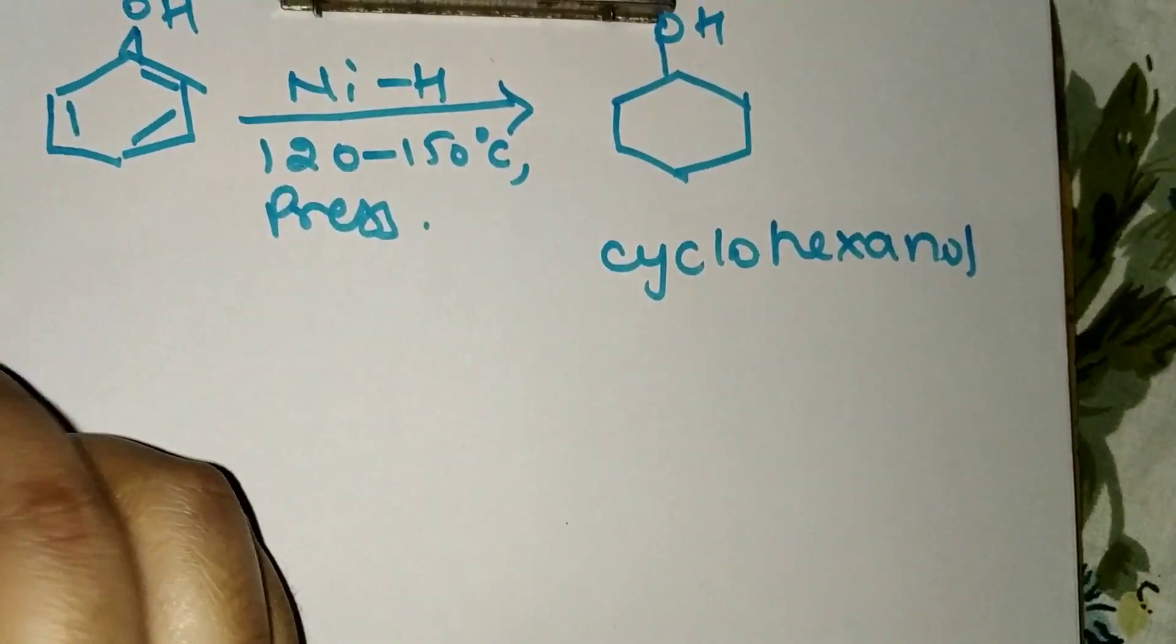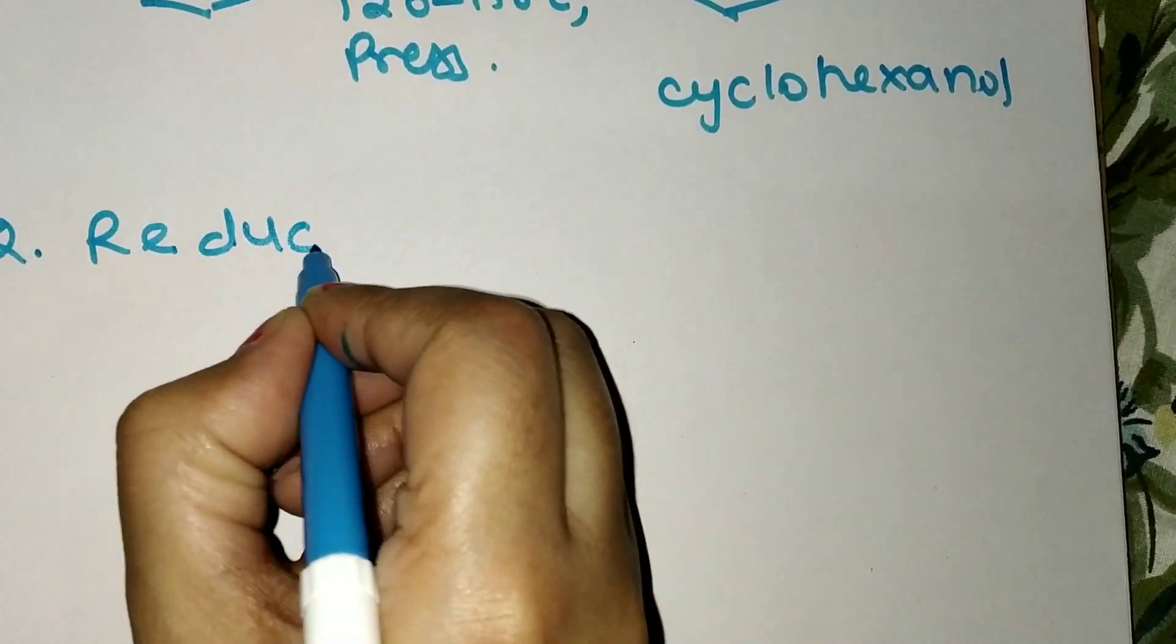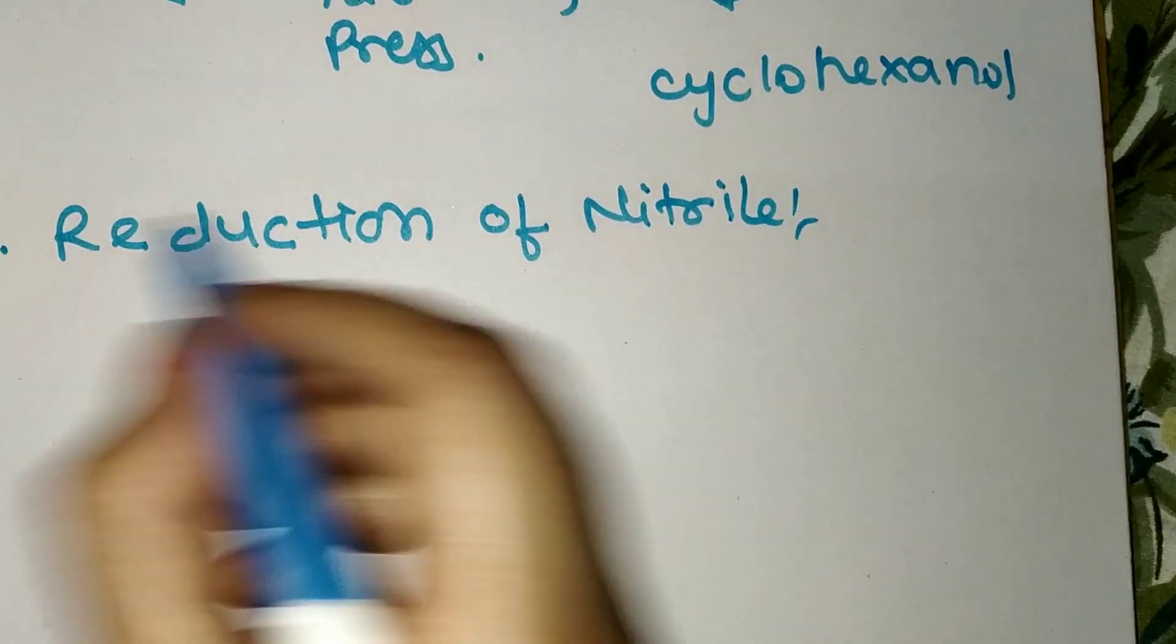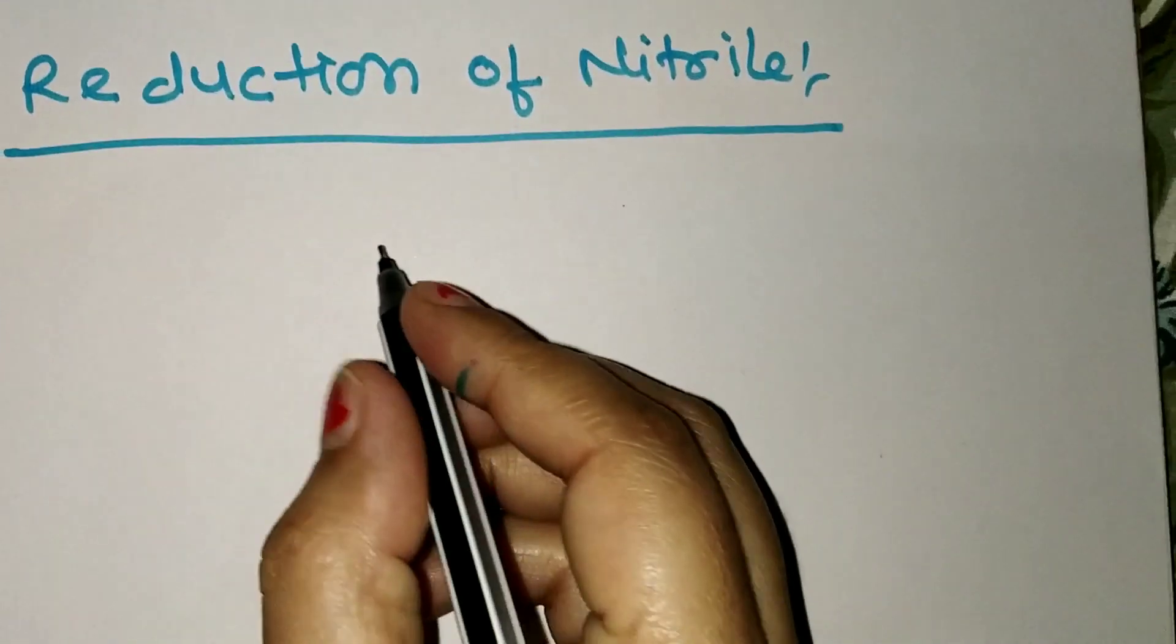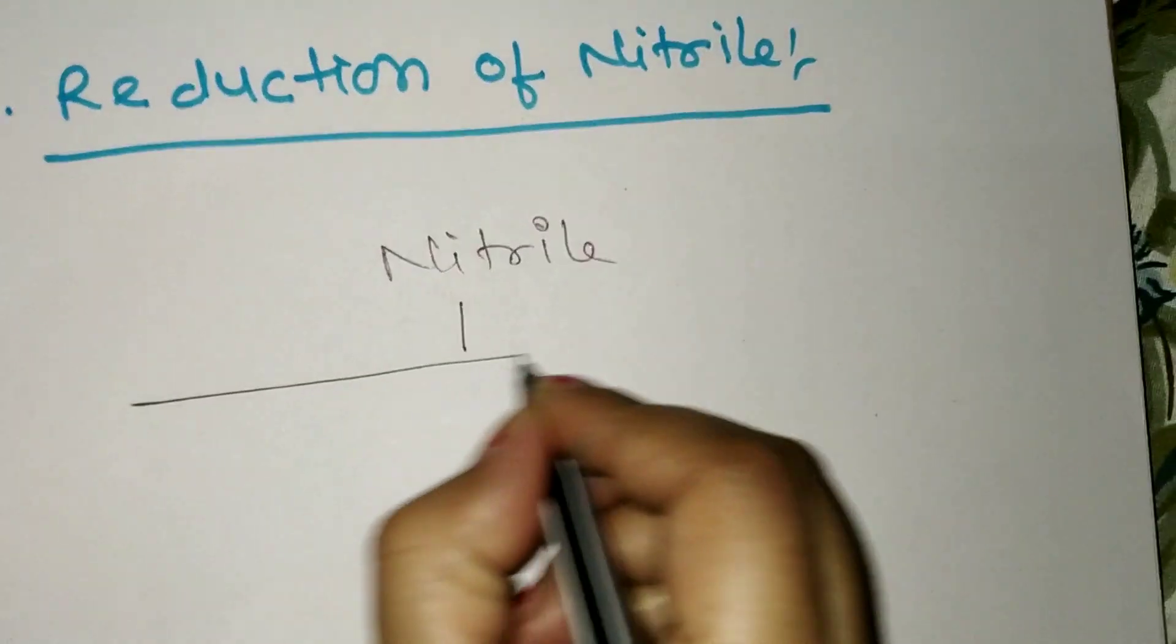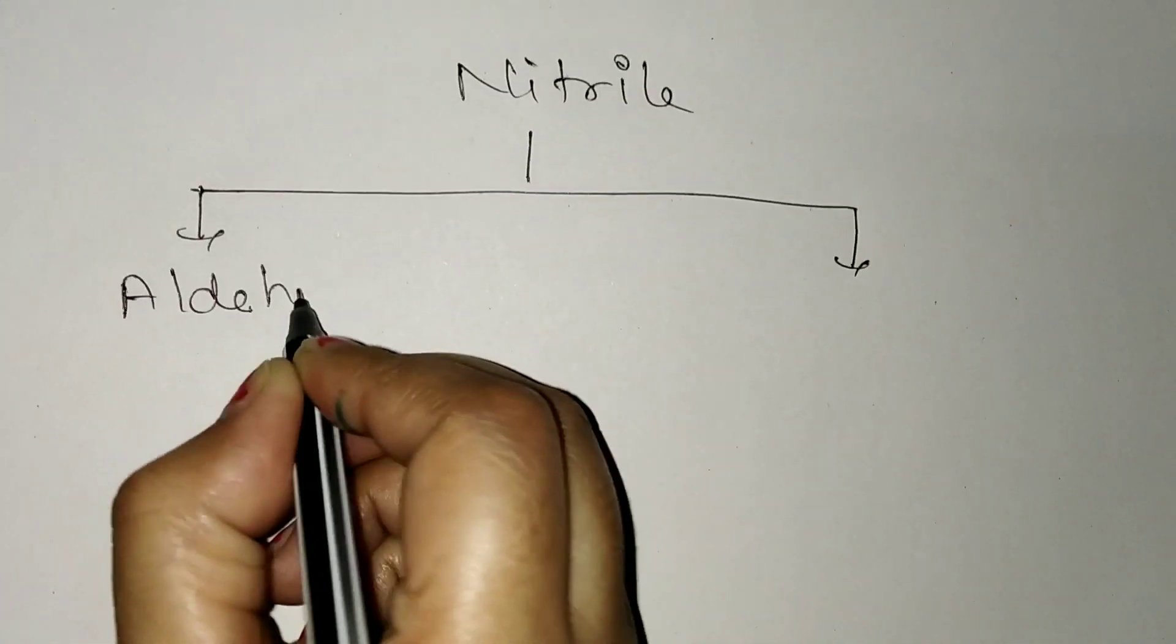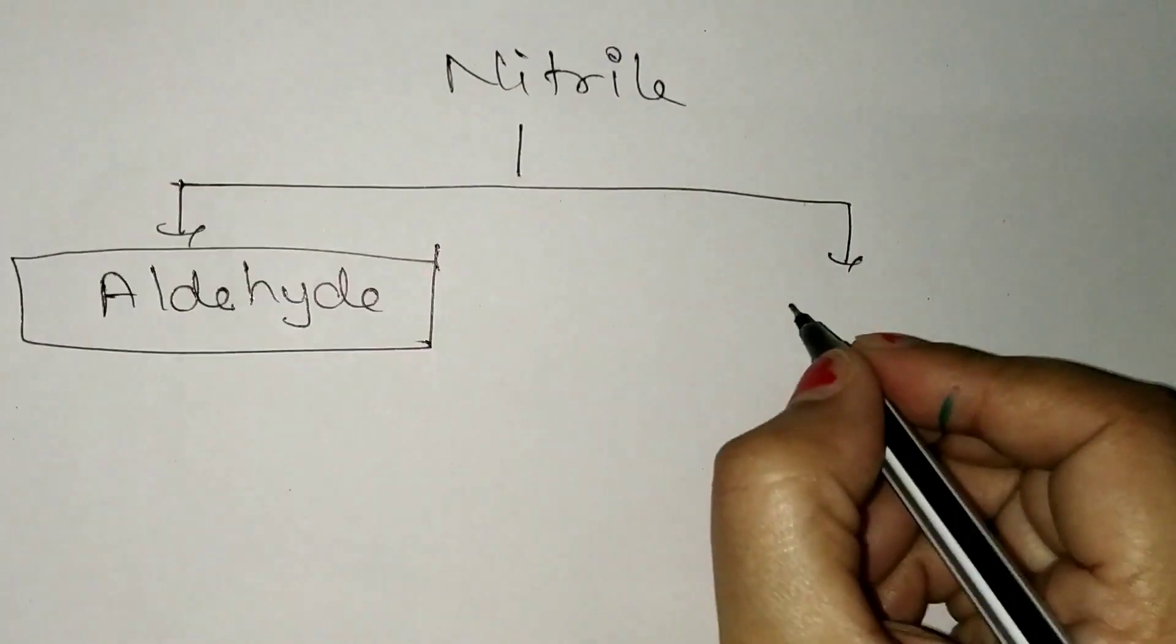Next is reduction of nitrile. This is also an application of Raney nickel. Nitrile changes into two parts: first aldehyde, second amine.